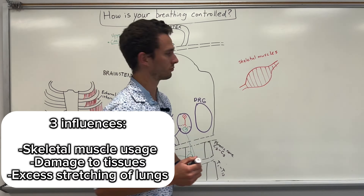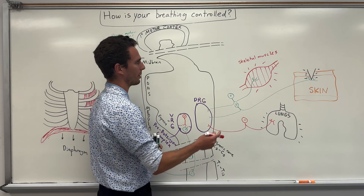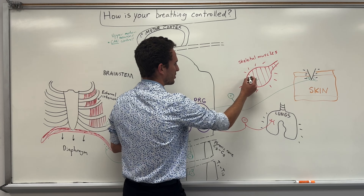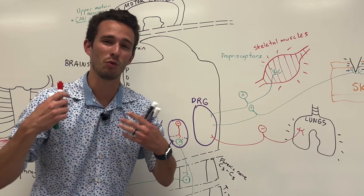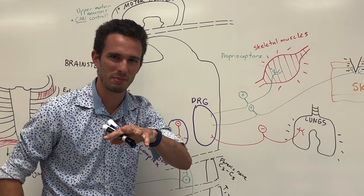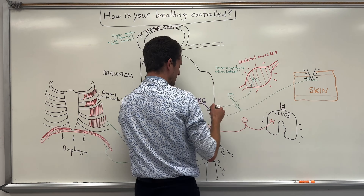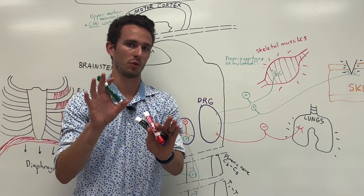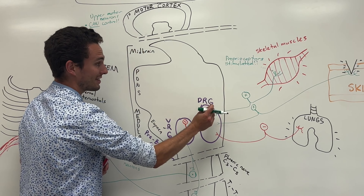Let's talk about three things that are going to affect the DRG. The first is skeletal muscles. Skeletal muscles have small receptors connected to sensory neurons called proprioceptors. Proprioceptors tell your body where you are in space — if you close your eyes and hold your arm out, you feel where it is because of proprioceptors. But proprioceptors also detect the stretching and contracting of your muscles. If your proprioceptors are stimulated, it means your muscle is undergoing a lot of contractions, usually meaning you're exercising.